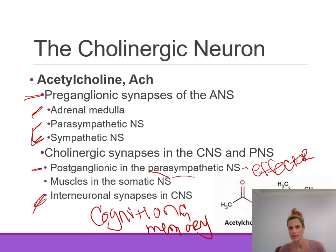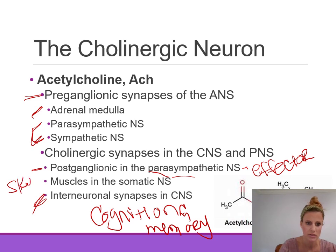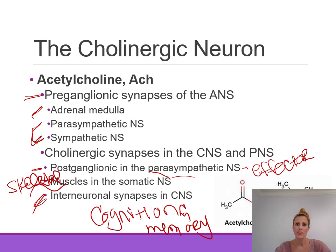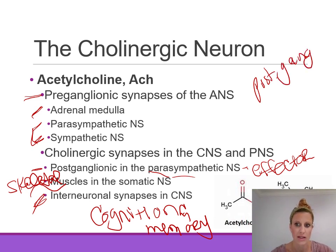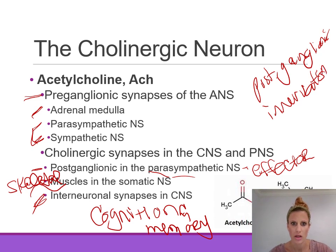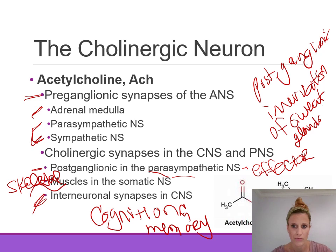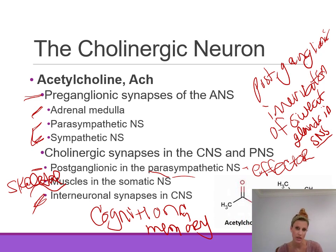Remember, the sympathetic nervous system utilizes epinephrine and norepinephrine in almost every situation. In the somatic nervous system, skeletal muscles are innervated by cholinergic neurons that utilize acetylcholine. The one caveat of the sympathetic nervous system is that postganglionic innervation of sweat glands utilizes acetylcholine as its neurotransmitter.